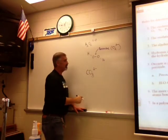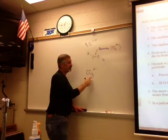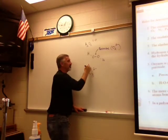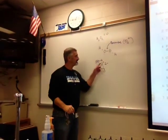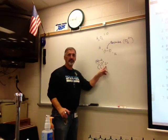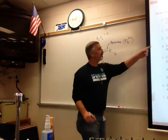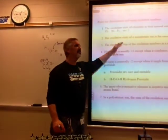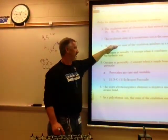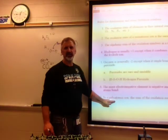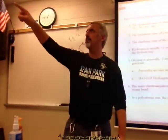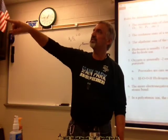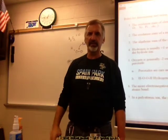For carbonate CO3 two-minus: oxygen is always minus two, we have three oxygens, so the total is minus six. The sum has to equal the charge of minus two, so carbon must be plus four — that's the oxidation state of carbon. Rule three says the sum of oxidation numbers always equals zero for a neutral compound, and adds up to the charge on the ion for polyatomic ions.